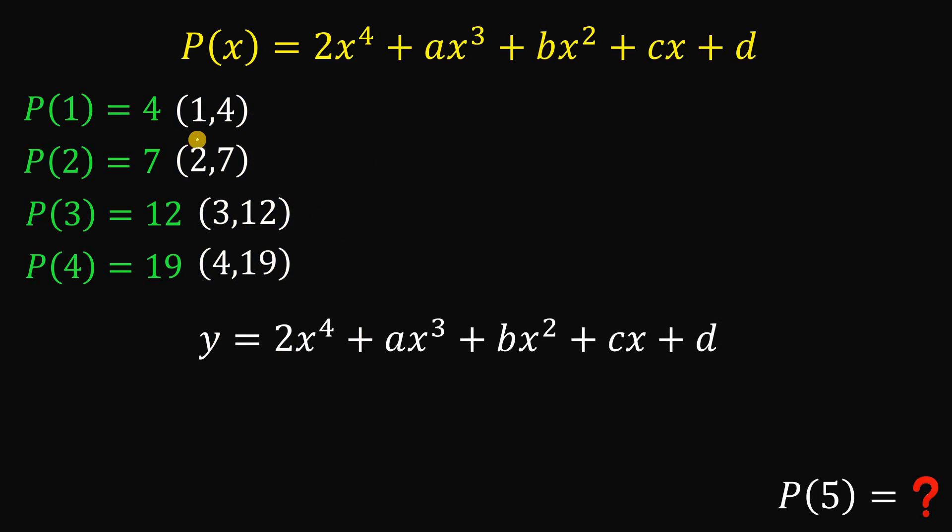Now first observe the given information. So 1 and 4. Notice, 1 squared plus 3 is simply equal to 4. 2 and 7, 2 squared plus 3 is simply equal to 7. 3 squared plus 3 is simply equal to 12, and 4 squared plus 3 equals 19. So this is the pattern that I see in this kind of question.